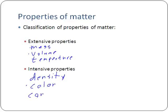Another intensive property might be conductivity. A spoon conducts electricity and heat very well. If I cut the spoon in half, I change the amount of spoon I have, but that doesn't affect its conductivity. It's a native property of the material that doesn't change when I change the amount of the substance. The one we're going to be talking about today, as I already mentioned, is density.